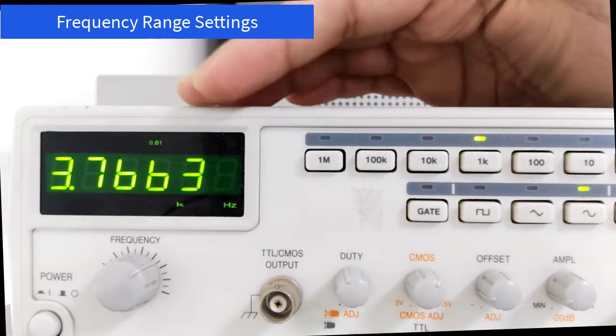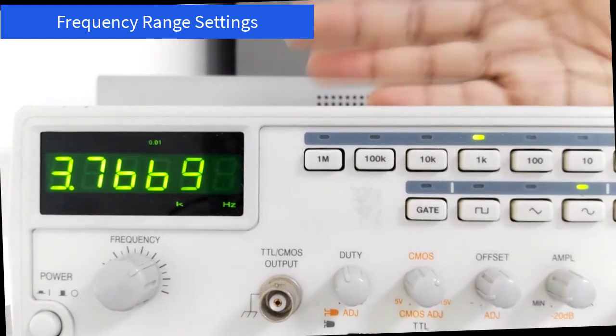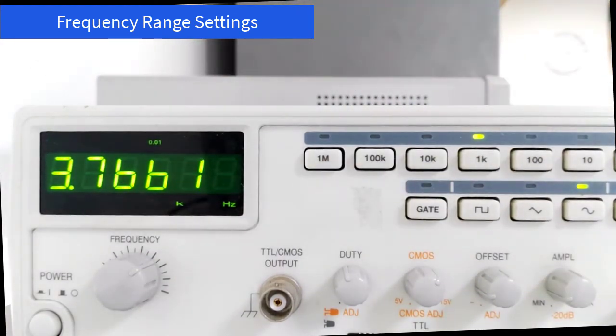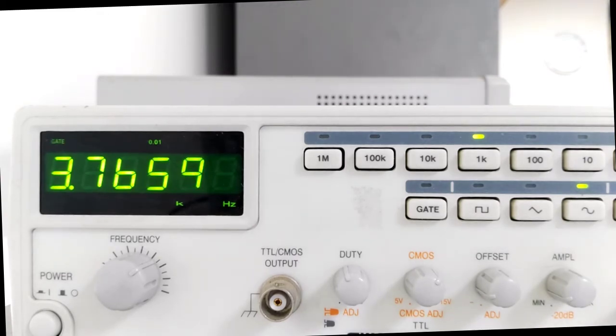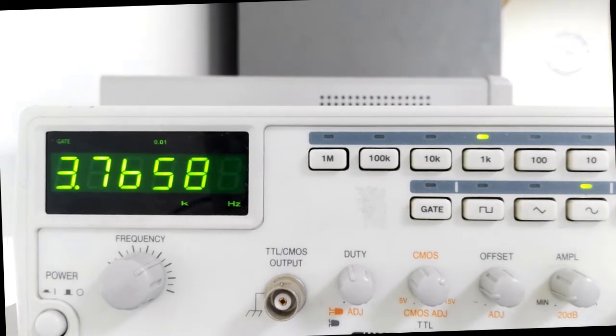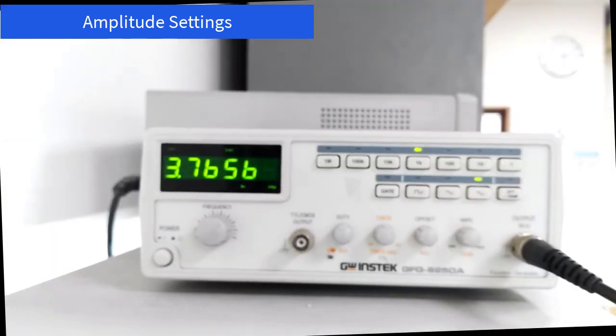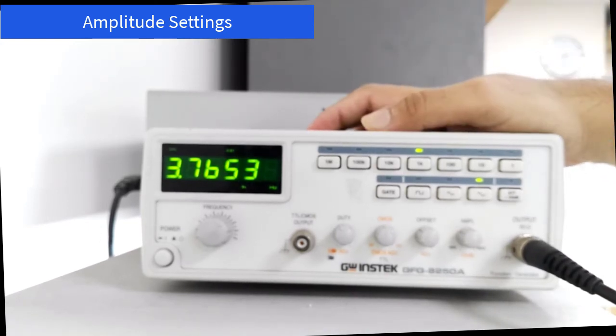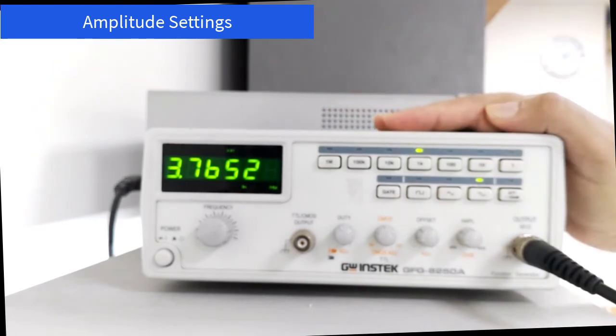One major difference between the simulation that we have been doing and this function generator is that you will be able to set the amplitude just like in simulation. In simulation, we would just set the value in Multisim by double-clicking the function generator and setting the value. But when you are using a function generator, you will have to adjust the amplitude using this knob.